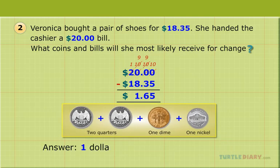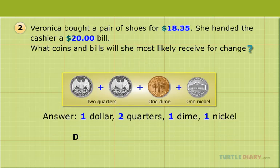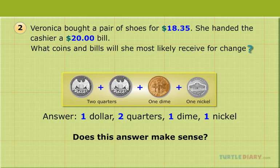Answer: $1.00, two quarters, one dime, and one nickel. Does this answer make sense? Yes, it would make sense that you would receive a little more than a dollar back in change.